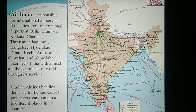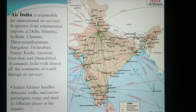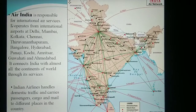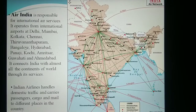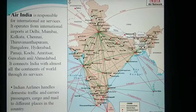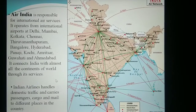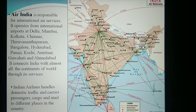This photo shows the routes — the red line shows the international route while the green line shows the domestic route. The red points indicate international airports and the black points indicate domestic airports. Air India is responsible for international air services and operates from international airports including Delhi, Mumbai, Kolkata, Chennai, Thiruvananthapuram, Bangalore, Hyderabad, Panaji, and Kochi. Air India connects India with almost all the continents of the world through its international flight network.